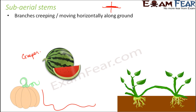Strawberry is another example of a sub-aerial stem modification. The stem moves horizontally along the ground and gives rise to new parts of the plant. These are weak stems that cannot stand upright, so they spread or creep along the ground. This horizontal spread provides mechanical support to the entire plant, allowing it to stand and perform its functions.